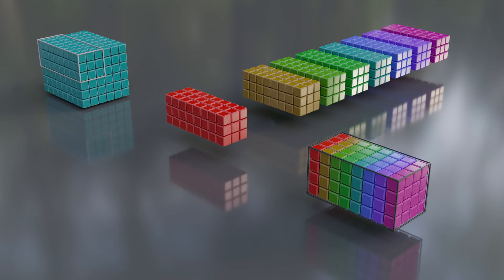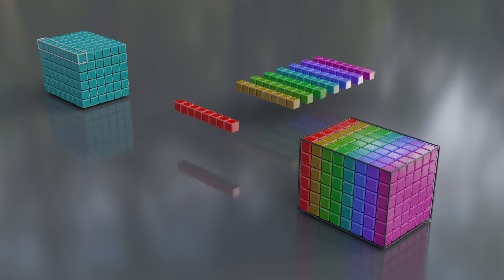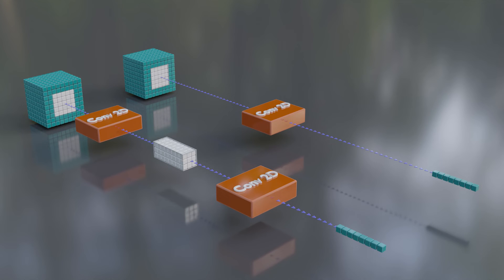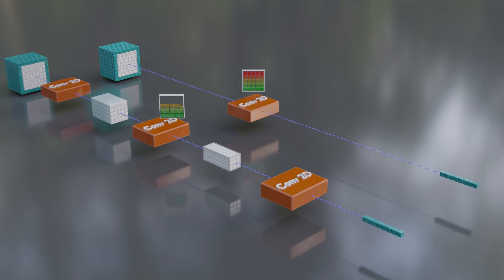To summarize, the kernel size controls the height and width of the filters, which also determines the height and width of the input patch. It also inversely affects the height and width of the output. You should generally use 3 by 3 convolutions because they're more efficient than 5 by 5 or 7 by 7.